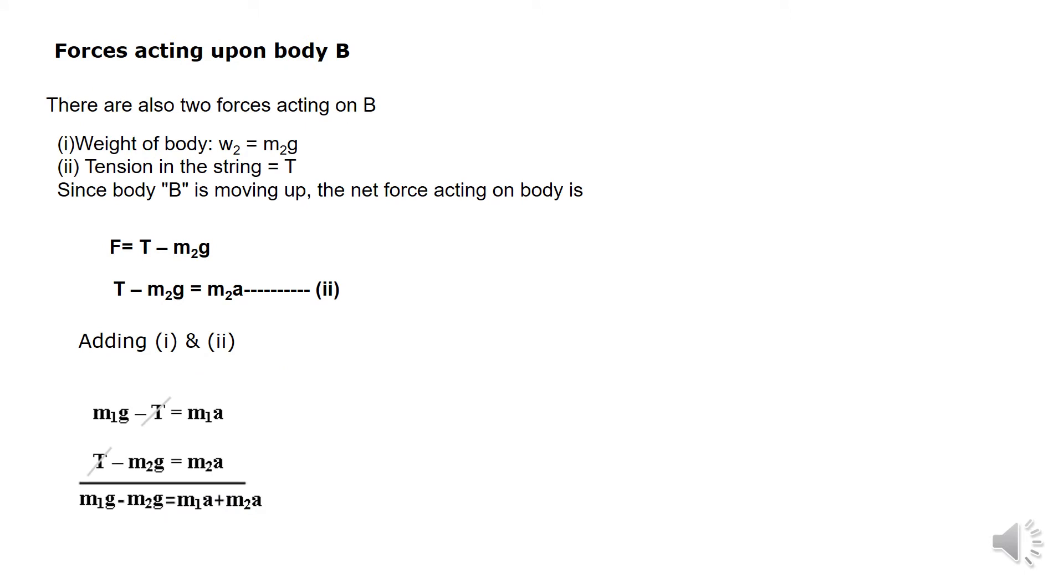Now the force acting on body B, as you know, it's moving upward. So the tension is greater than its weight. So the net force will be T minus M2G. But we are talking about body two. So T minus M2G equals M2A. This is your second equation.